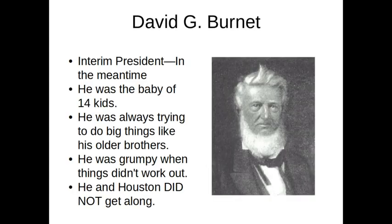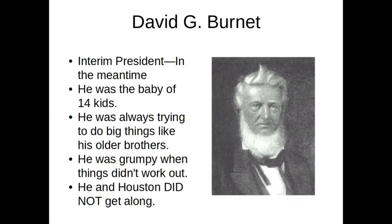The first guy I want to show you is David G. Burnett. He did not fight at the Battle of San Jacinto, but he was also not our real president. He was what's called an interim president — that means he was president in the meantime. Back at Washington on the Brazos, when Texas declared its independence from Mexico, they all signed the paper really fast and then they ran away. While they were there, they also picked a president, an interim president, and an interim vice president. They didn't spend a lot of time on it — they pretty much just said who wants to do this, and left. So David G. Burnett became the interim president.